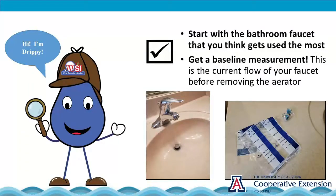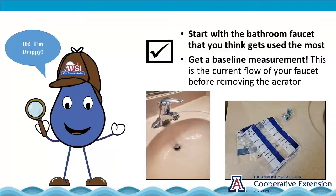Start with the bathroom faucet that you think gets used the most. You will start by getting a baseline measurement. This is the current flow of your faucet before removing the aerator.